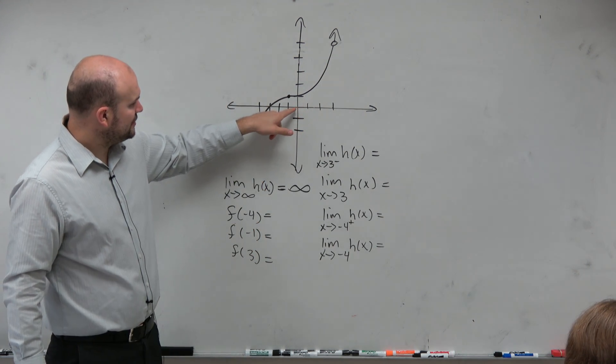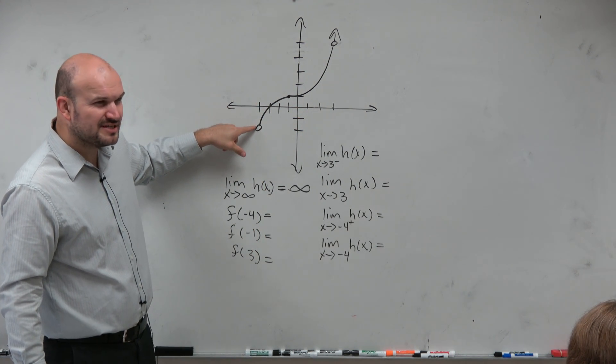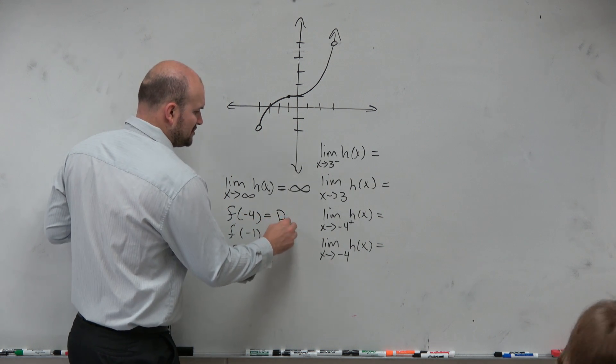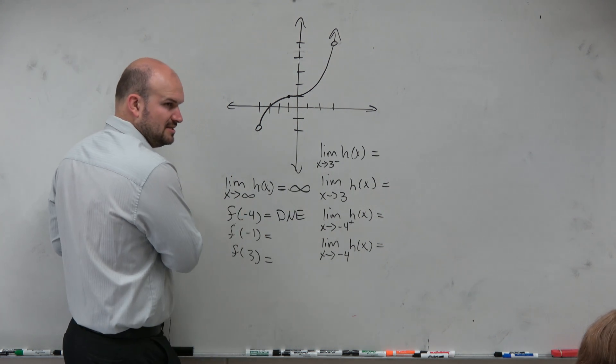So anyways, f of negative 4. So you go over to negative 4, and you go down, you see that there's a hole. So therefore, there is no value of this function that exists. So we can just say, does not exist.